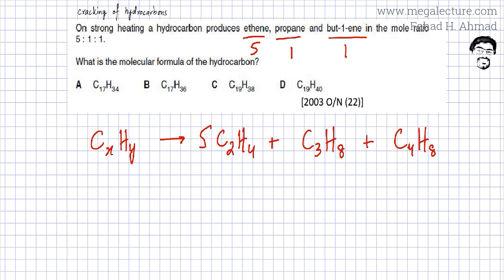Now this is what happens when cracking happens - the molecule breaks down into smaller molecules. So if you add up all the molecules together, you'll get the original molecule.